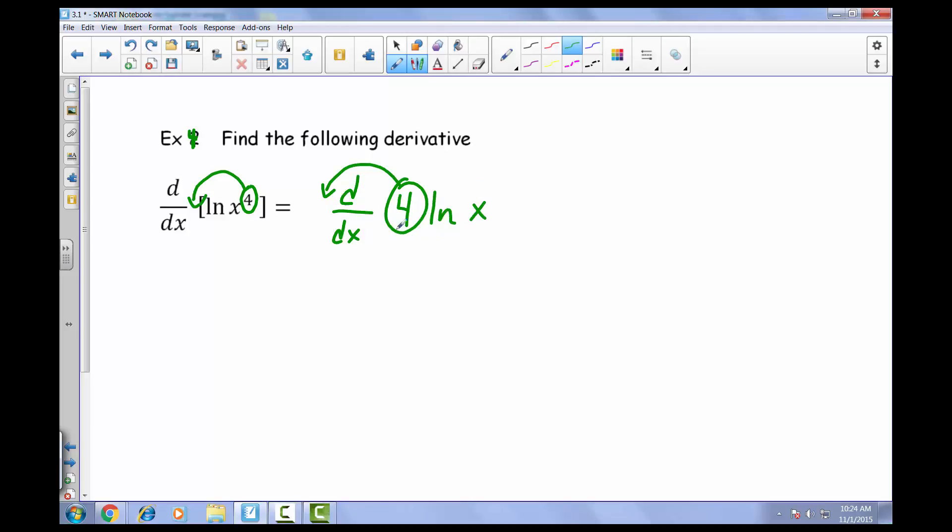The reason why that works is it kind of goes back to our ideas with properties of limits. So we can go ahead then and throw in this 4 in front of the derivative. So then we have 4 times the derivative with respect to x of the natural log of x.